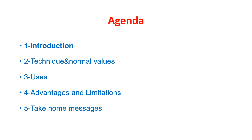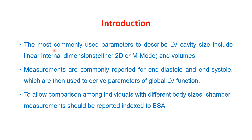Let's start with a short introduction. The most commonly used parameters to describe the left ventricular size include linear dimensions using 2D or M-mode. Left ventricular volume measurements are commonly reported in diastole and systole, which are then used to derive parameters of global left ventricular function. To allow comparison among individuals with different body sizes, chamber measurements should be reported indexed to body surface area.